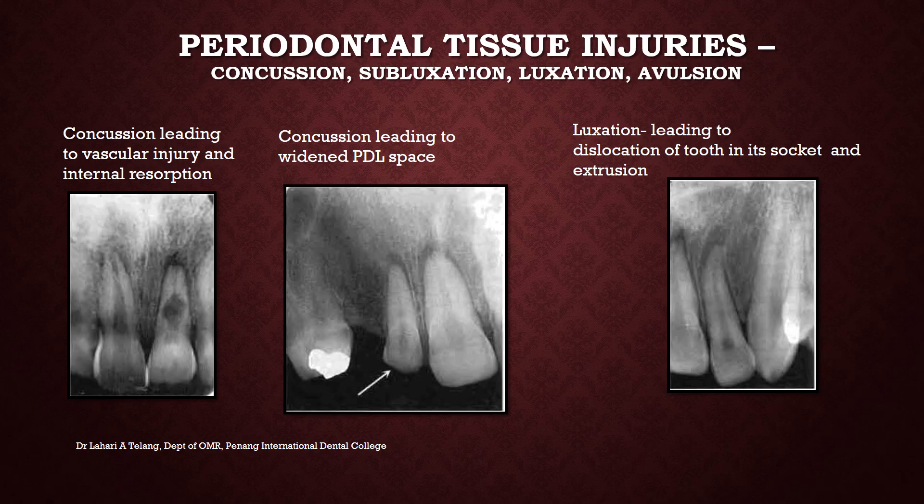Periodontal tissue injuries include concussion, subluxation, luxation, and avulsion. Concussion can lead to vascular injuries and internal resorption, as seen in this image — a large internal resorption defect within the pulp as well as a concussion defect. It can also lead to widening of the PDL space. Luxation can lead to the entire dislocation of the tooth from its socket and extrusion.